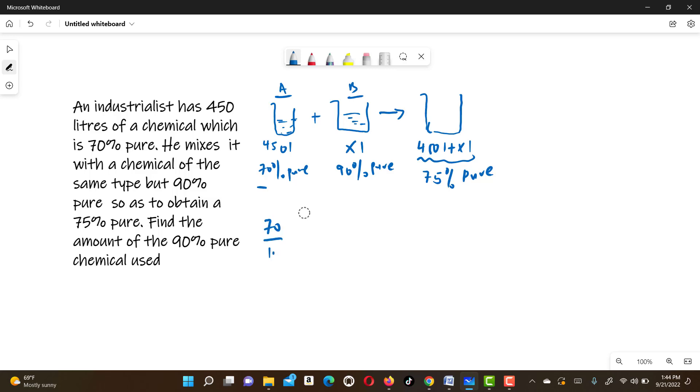So 70% of 450 is pure. This will give us 315 liters. Also, we are going to find 90% of X is 0.9X. So 0.9X liters is pure in B.